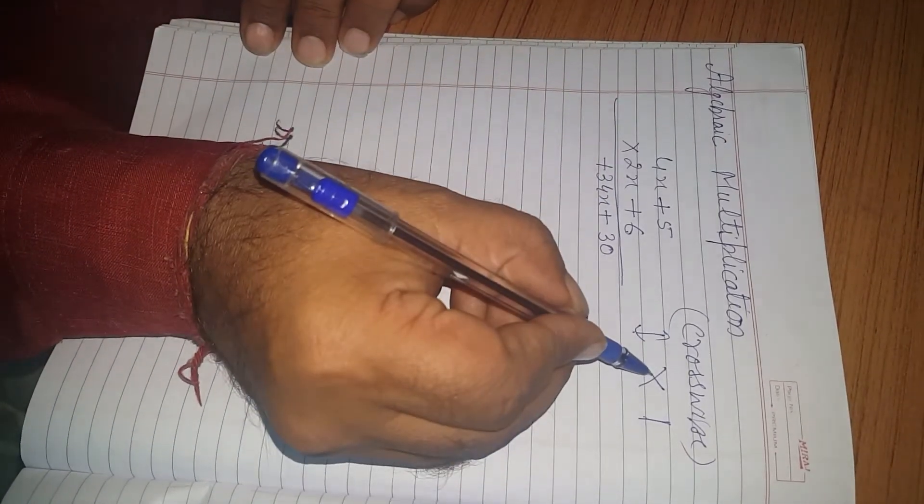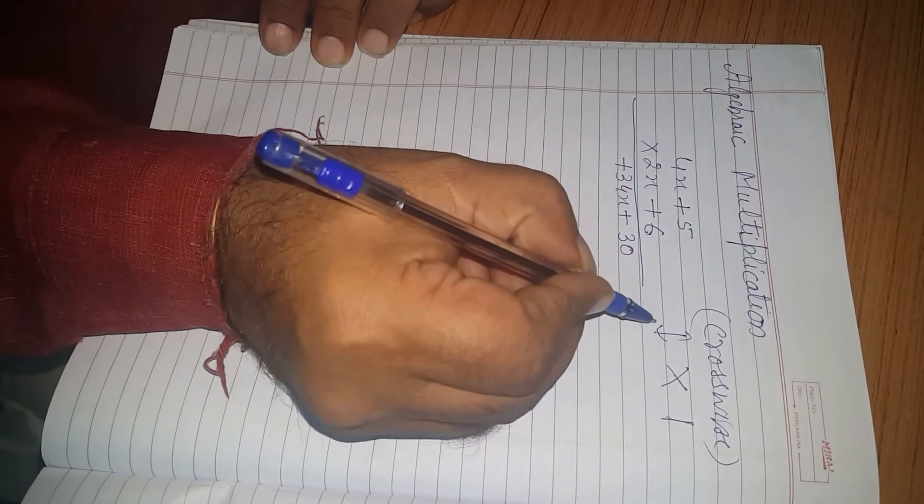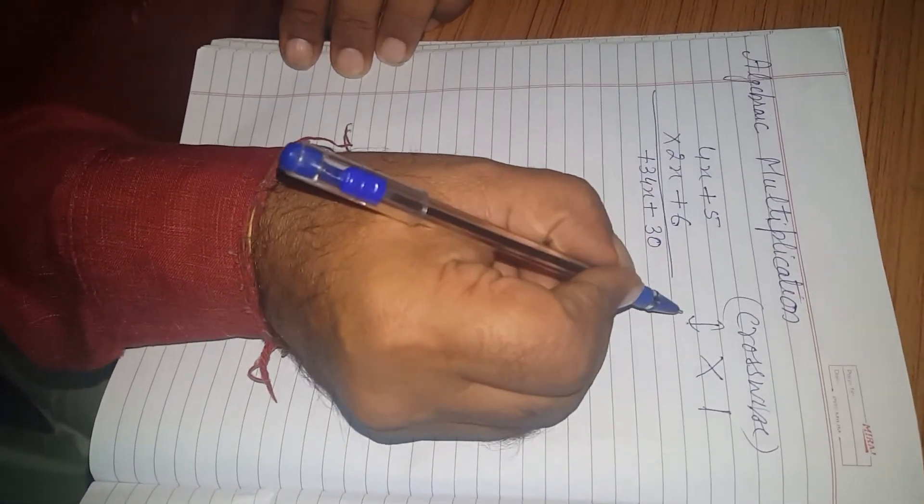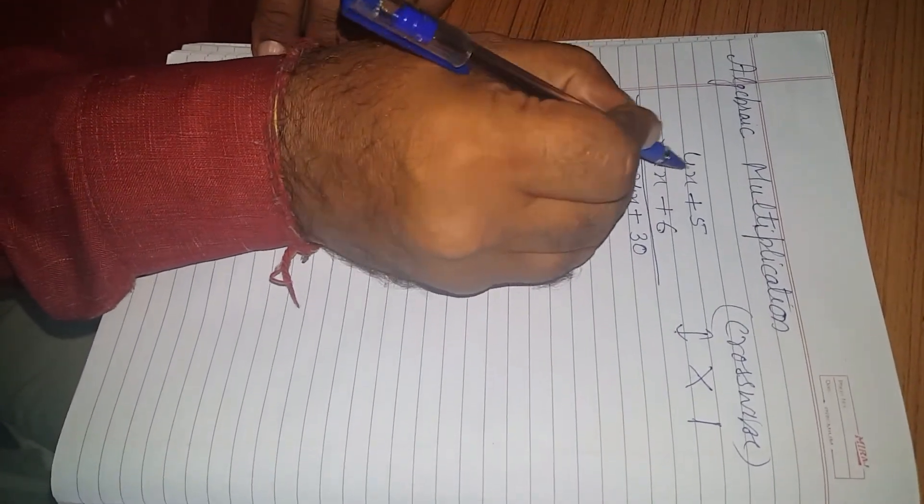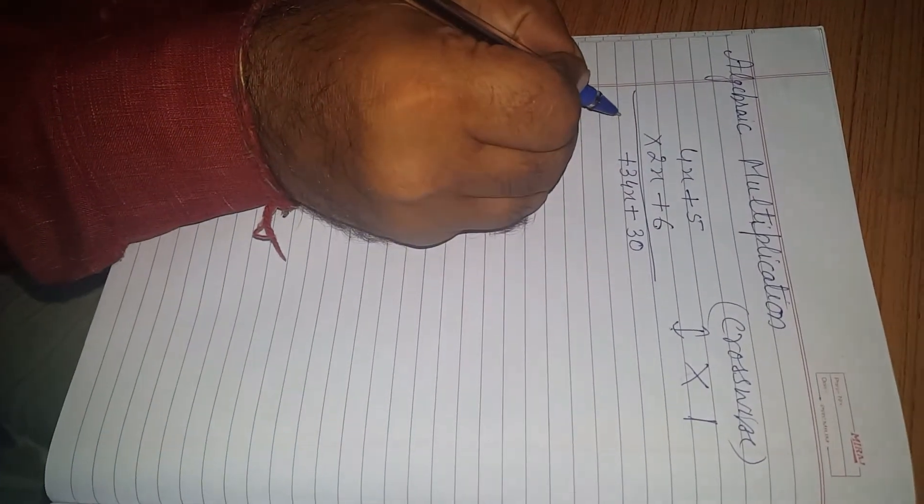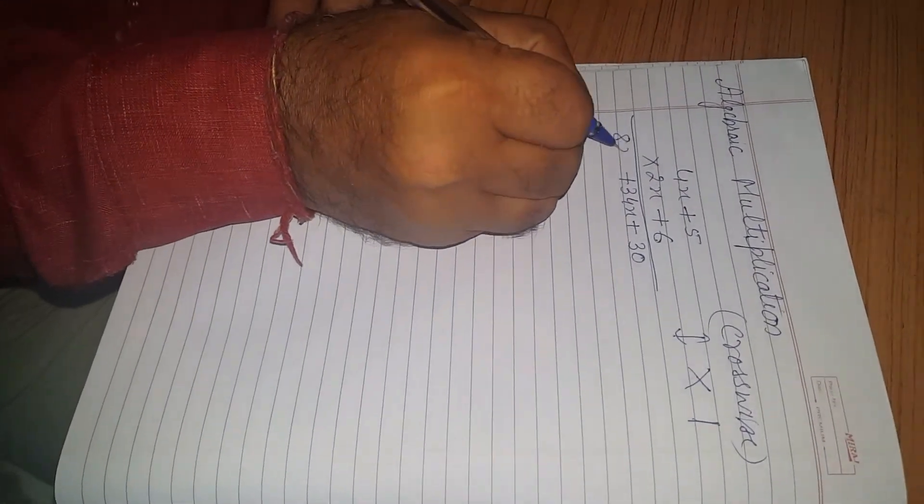The second step is Crosswise which we had done. Now, third step is again Vertical. So, we will do this Vertical. 4x multiply 2x. We get 8x square.